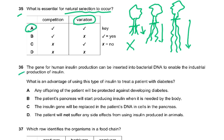Question number 36: The gene for human insulin production can be inserted into bacterial DNA for industrial insulin production. What is the advantage of using this insulin to treat a diabetic patient? Options about offspring protection and pancreas repair are wrong. The answer is D — the patient will not suffer side effects from animal-derived insulin, because the human insulin gene was inserted into bacteria, which then produce human insulin.